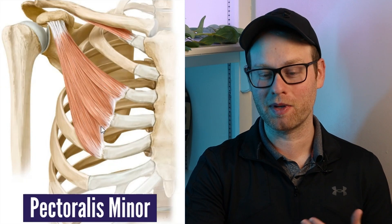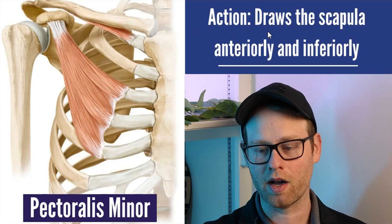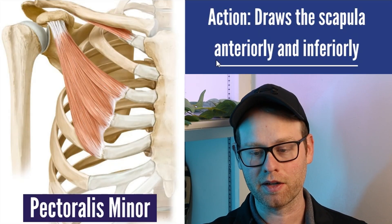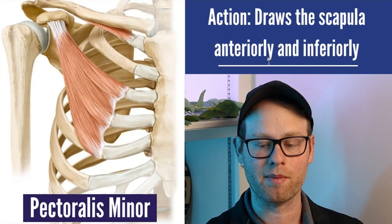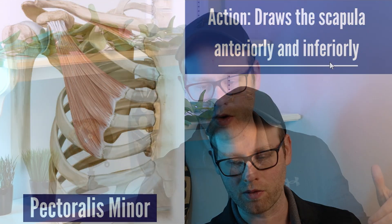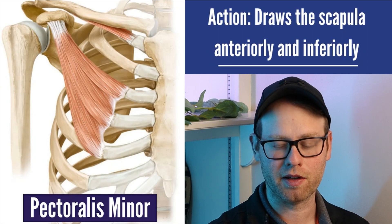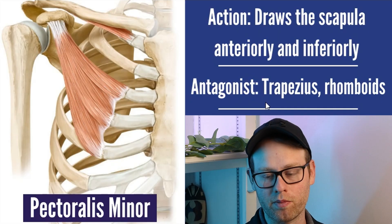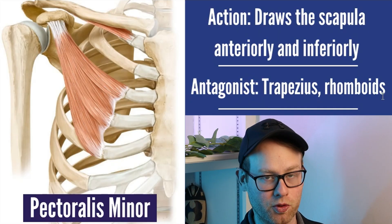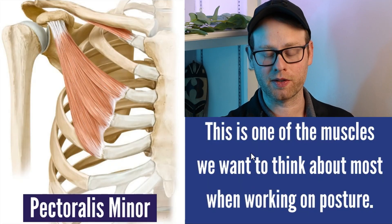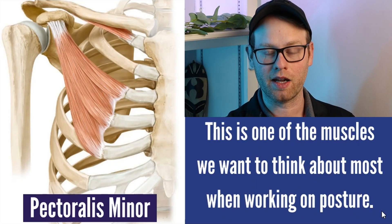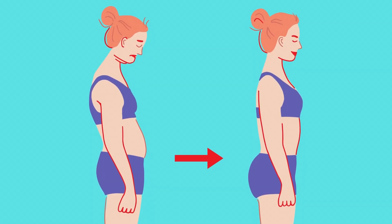Speaking of pec minor, one of the main things it does is draw the scapula anteriorly and inferiorly — forwards and downwards into a potentially rounded position. That's not to say pec minor is a bad muscle; there are tasks that require us to be in that position. Because pec minor pulls the scapula forwards and downwards, the antagonist muscles to think about are primarily the trapezius and rhomboids. This is one of the muscles to think about most when working on posture — stretching out the pecs, like a doorframe stretch, can really help someone stuck in a rounded forward position.